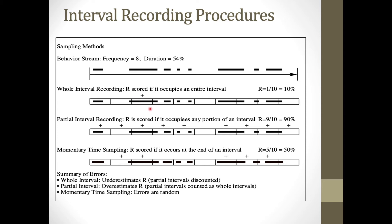With partial interval recording, the response is scored if it occurs during any portion of the interval. Applying this to the same data stream, bizarre speech occurred in nine of the ten intervals — 90%. The artifact here is that it overestimates how much behavior occurred, since in some intervals the behavior only occurred for a very brief amount of time.